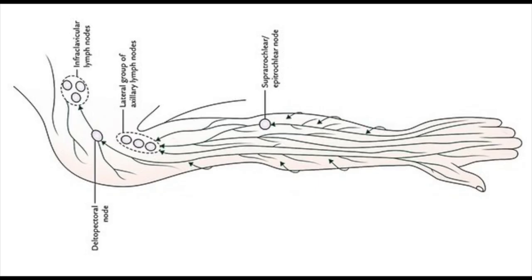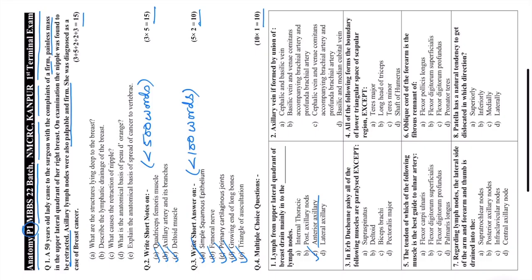The axillary vein is thus formed by the union of the basilic vein and venae comitantes accompanying the brachial artery and profunda brachial arteries — answer is choice B. The entire lymphatic drainage of the upper limb drains into the lateral group of axillary lymph nodes, except the thumb, its web, and the lateral part of the forearm, which drain into the infraclavicular (cephalic) group of lymph nodes.